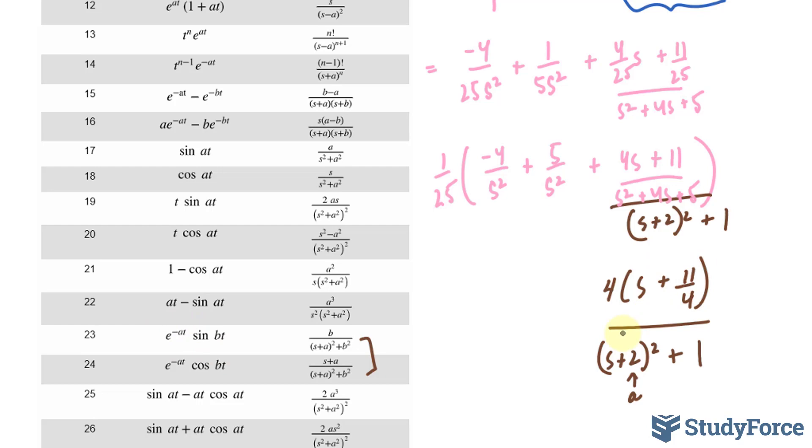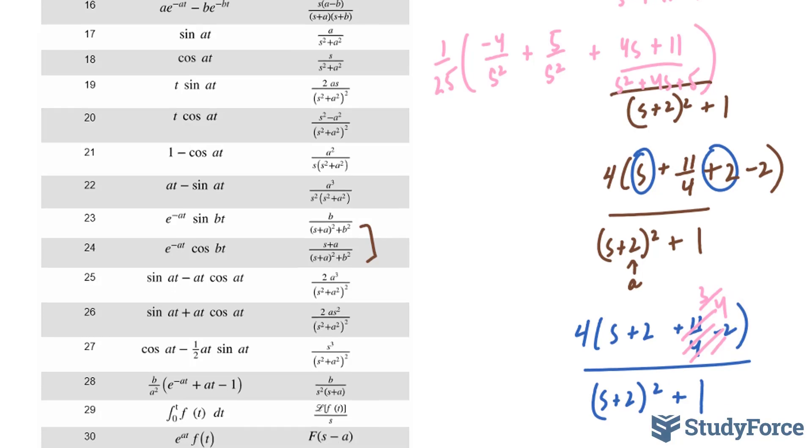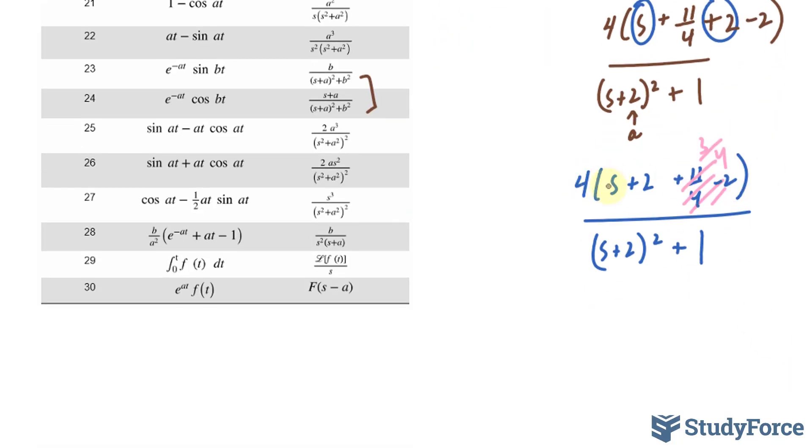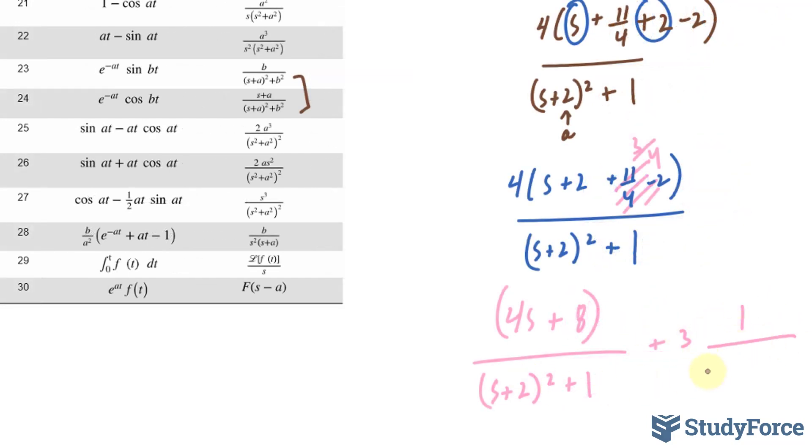So over here, I'm going to write down plus 2 minus 2. And I'll group together this term and this term, leaving us with 4 bracket (s + 2) + 11/4 - 2 over the common denominator. 11/4 - 2 is 3/4. So I'll scratch this out and write down 3/4. And now if I multiply the 4 into each of these terms, this becomes 4s, this becomes 8, and this becomes 3. So we have 4s + 8 + 3. Putting brackets around these two, I can now split the denominator into two fractions. Take a look. So I have over here, (s + 2)^2 + 1. And over here, I have 3 times 1 over the same denominator.